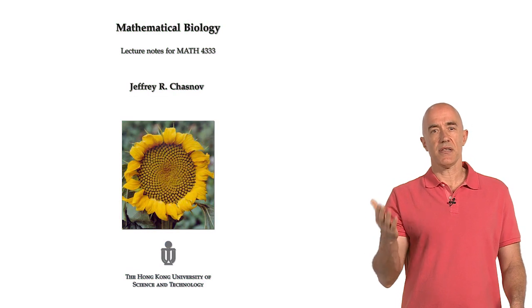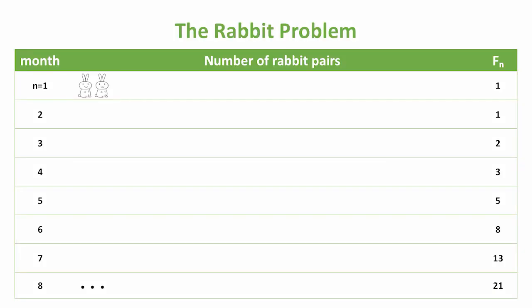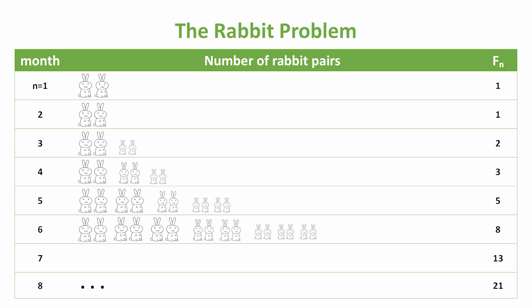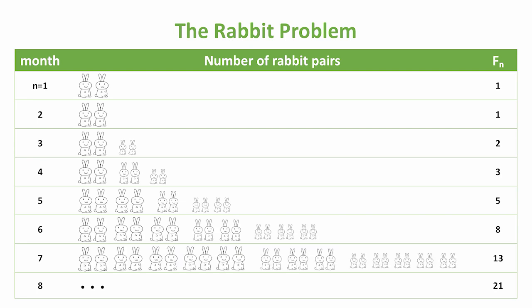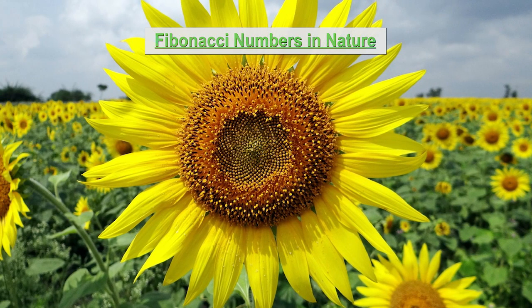How did I get interested in this subject? At my university, I teach a course on mathematical biology. And in this course, I discuss Fibonacci's famous rabbit problem, which is one of the first applications of mathematics to biology. I also talk about how the Fibonacci numbers can pop up unexpectedly in nature.